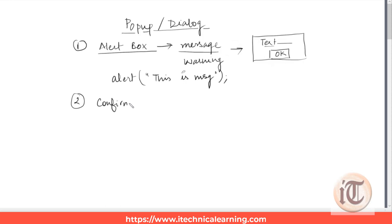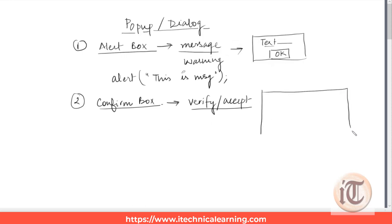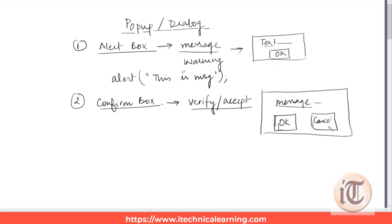The second type of box is called the confirm box. As the name suggests, the confirm box is used when a user wants to verify or accept something. When a confirm box pops up, it displays a message and contains two buttons: OK and Cancel. If the user clicks OK, the box returns true; if the user clicks Cancel, it returns false. So it is up to the user whether they want to accept or reject.